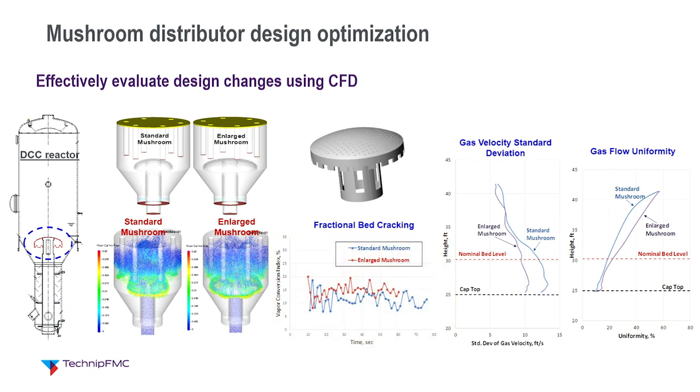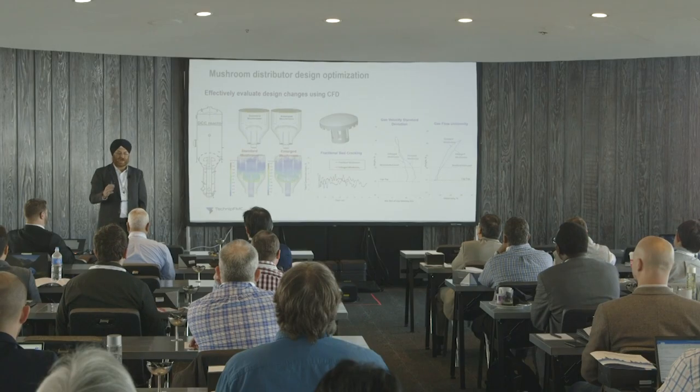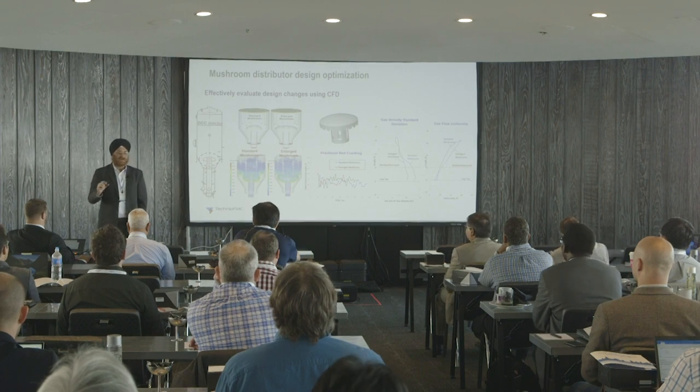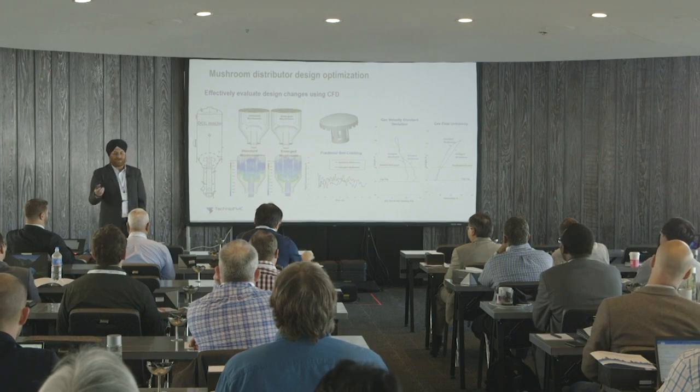Now the vapors can spend more time in the bed rather than bypassing without getting cracked. So the performance improved. If I look at the fractional bed cracking, it has improved with the enlarged mushroom compared to the standard one. I don't generally trust absolute numbers, but the delta change is key — it improved by almost two times, which is a good factor. That means I can either reduce my catalyst inventory, or if my propylene yield target is constant, I can use lower inventory in the same bed to achieve the propylene yield. This gives us a directional view of what design changes we should be making.